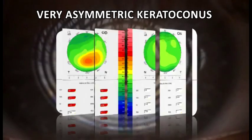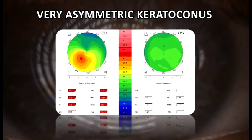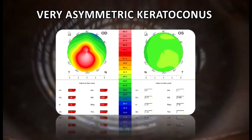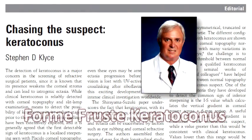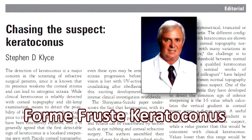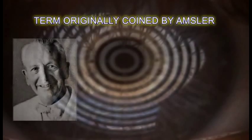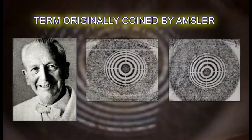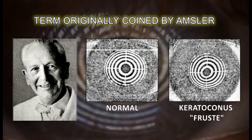This is the case of the fellow eye of patients with very asymmetric keratoconus, which was referred by Kleiss as Horum-Fruz keratoconus, a term originally coined by Amsler in longitudinal studies involving photocereidoscopy.